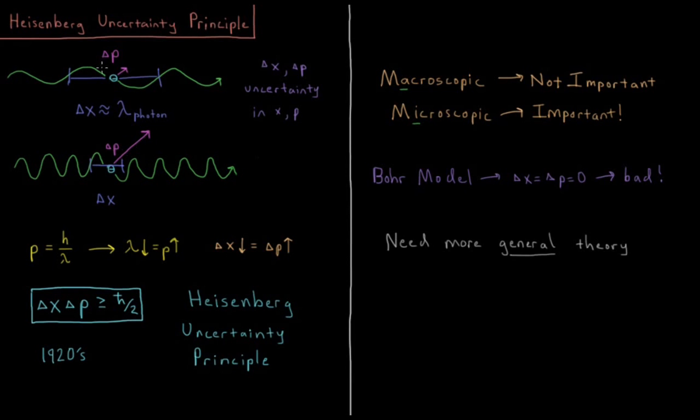Notice that these two are inversely related to one another. When my uncertainty in position goes down, my uncertainty in momentum goes up. When my uncertainty in momentum goes down, my uncertainty in position goes up. There is an inverse relationship between the two of those.